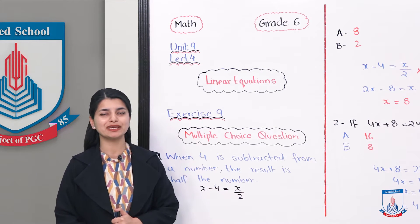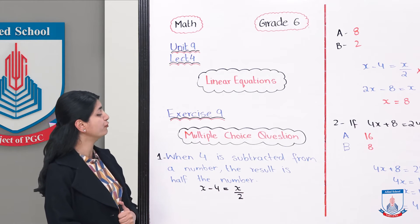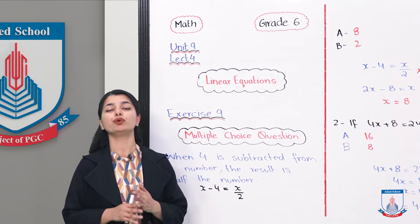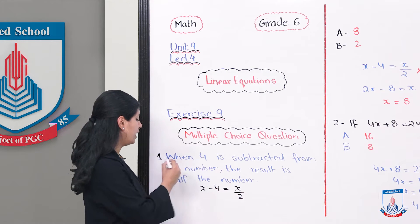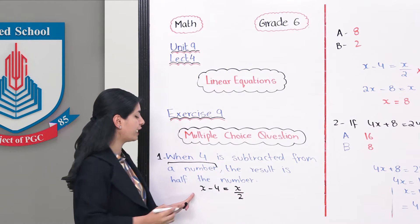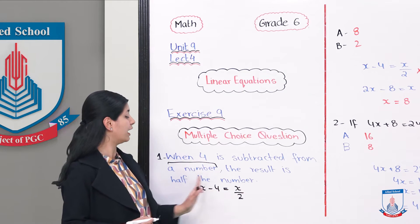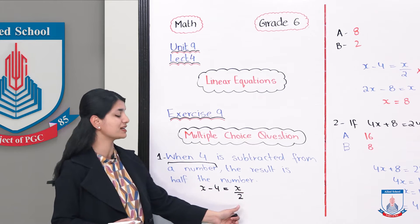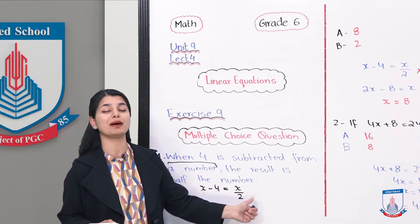We're looking at the multiple choice question for Exercise 9. The first question: when 4 is subtracted from a number, the result is half the number. So if we use x for the number, then x minus 4 equals half the number — our equation is x minus 4 equals x over 2.